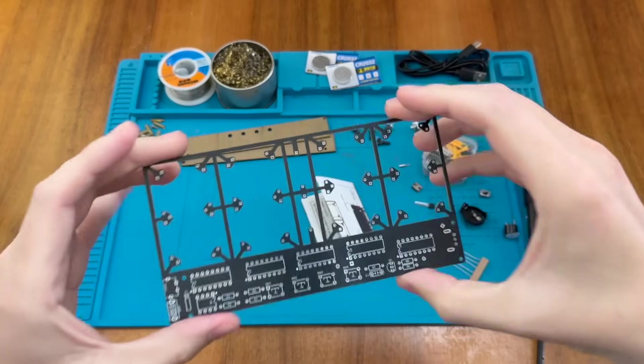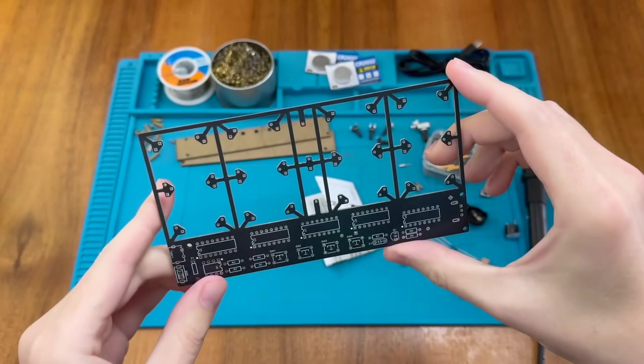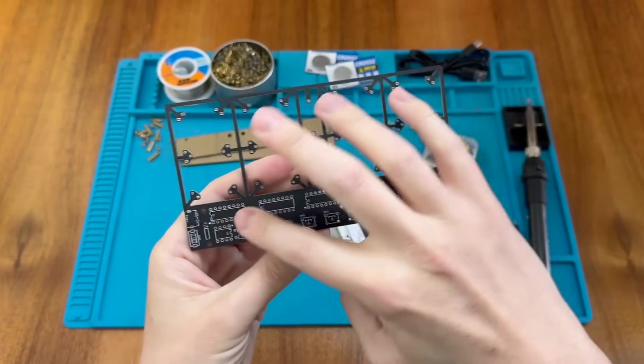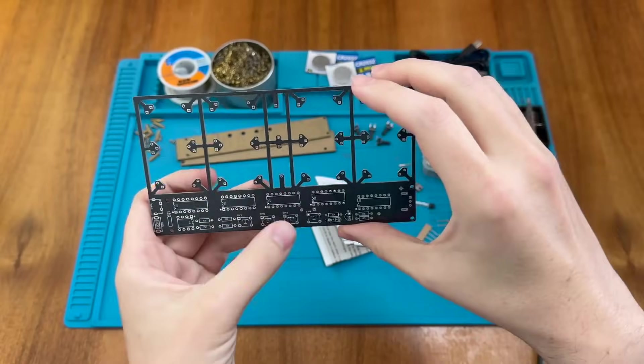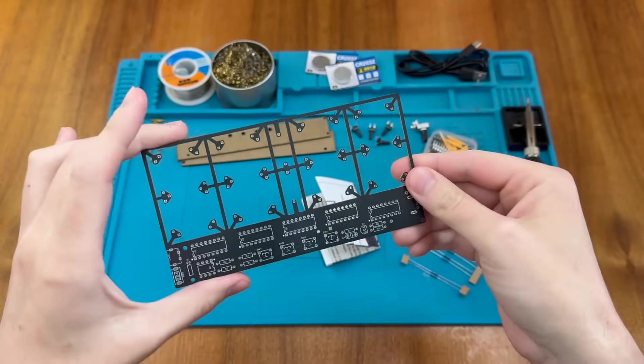As you can see we have this nice PCB which includes a frame where we're going to put our LED filaments. We have a number of chips to install and some switches down the bottom as well. So that's going to be plenty of soldering to do in this video.